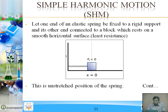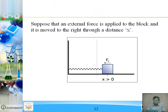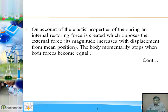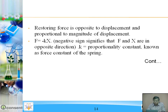This is the initial, unstretched position of the spring. Suppose an external force is applied to the block and it is moved to the right a distance x. The spring is elastic — when we stretch it, a restoring force occurs which tries to restore its original position. On account of the elastic properties of the spring, an internal restoring force is created which opposes the external force. Its magnitude increases with the displacement from mean position, and the body momentarily stops when both forces become equal.